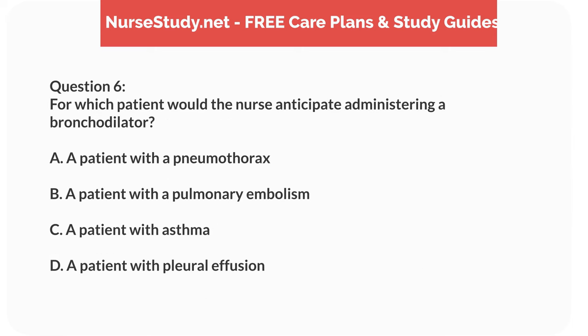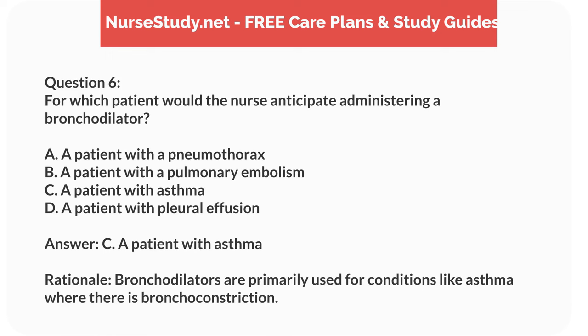Question 6. For which patient would the nurse anticipate administering a bronchodilator? A. A patient with a pneumothorax. B. A patient with a pulmonary embolism. C. A patient with asthma. D. A patient with pleural effusion. Answer: C. A patient with asthma. Rationale: Bronchodilators are primarily used for conditions like asthma where there is bronchoconstriction.